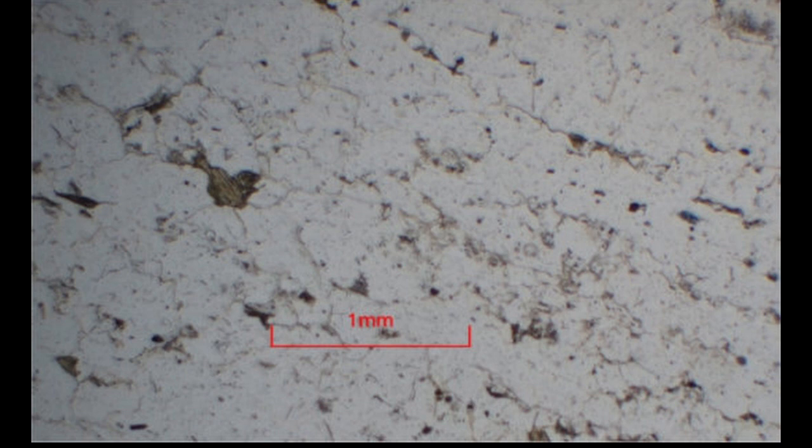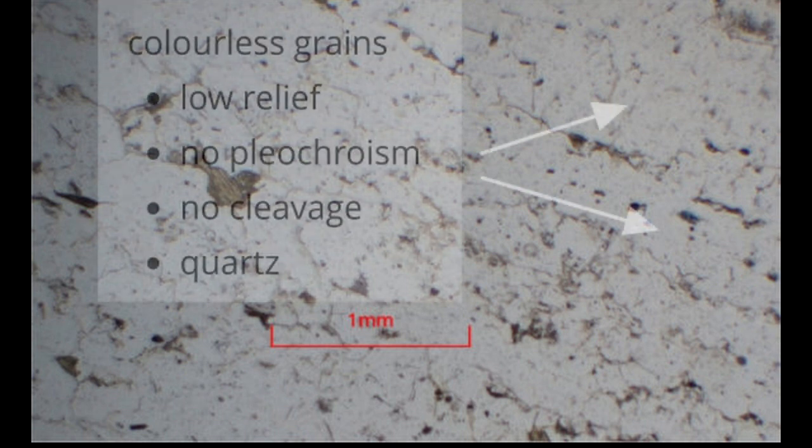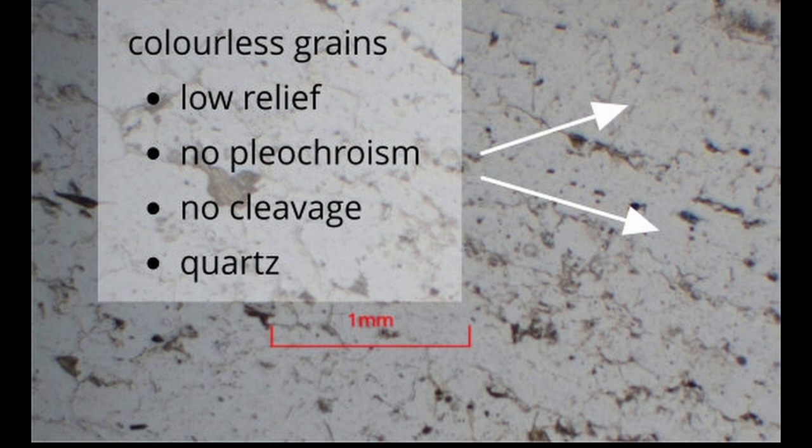In plain polarised light, the grains show irregular outlines and they are interlocking crystals rather than sub-rounded or sub-angular clasts. Most of the grains are colourless and have low relief and so do not stand out from the other grains. They show no pleochroism, that is there is no colour change as the stage is rotated, and they have no cleavage. These grains are quartz crystals.